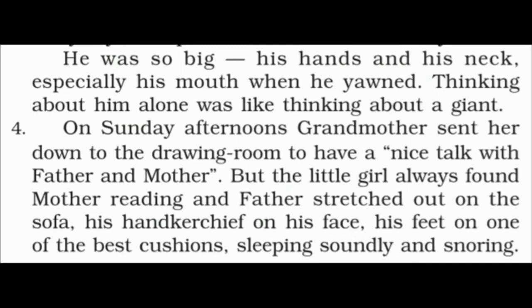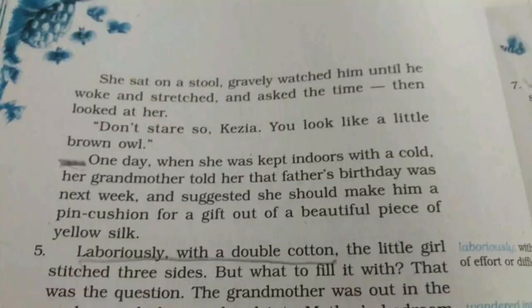On page 34, she sat on a stool and gravely — meaning seriously — watched him. Kezia's father was asleep and she would just sit and watch him carefully until he woke up, stretched his body, and asked the time. Then he would look at Kezia and say, 'Don't stare so, Kezia. You look like a little brown owl.' Kezia's father compared her to a little owl, saying she was staring at him just like an owl does.